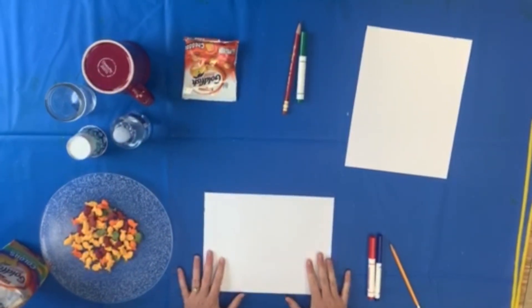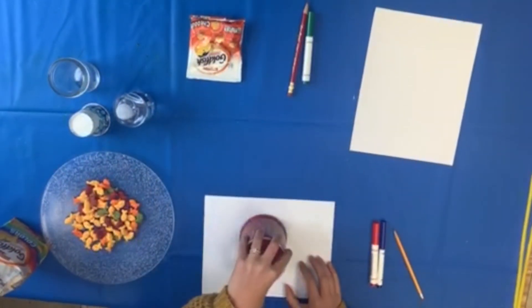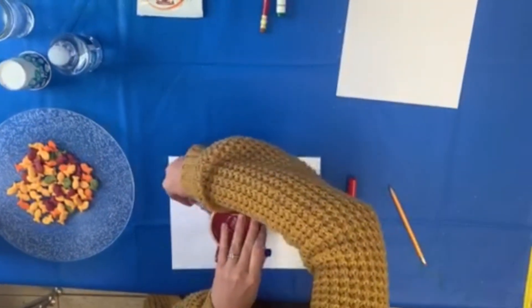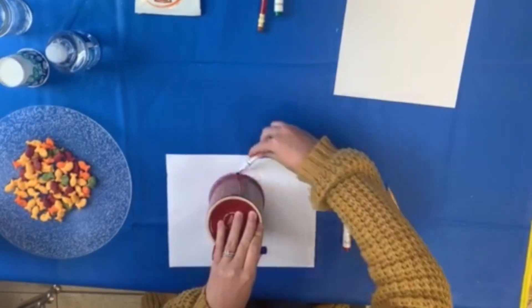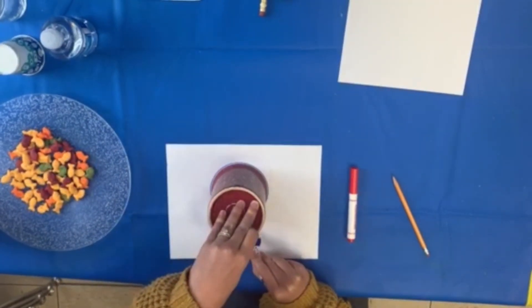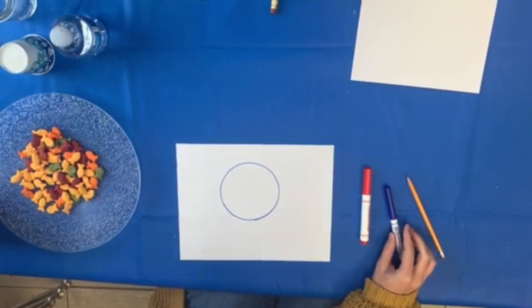Now when you're ready, take your paper and get a cup. We're going to trace around using a marker first to practice our circles. Go all the way around, and when you finish, lift it up. Look, it's a circle.